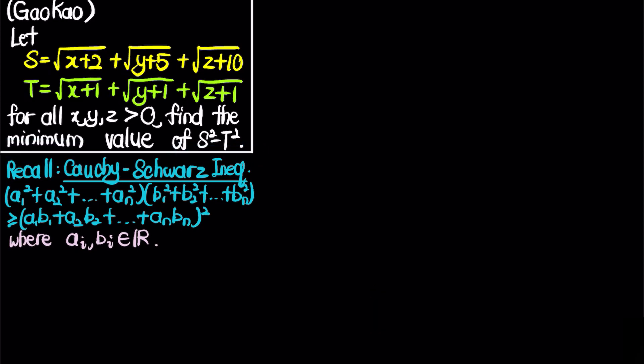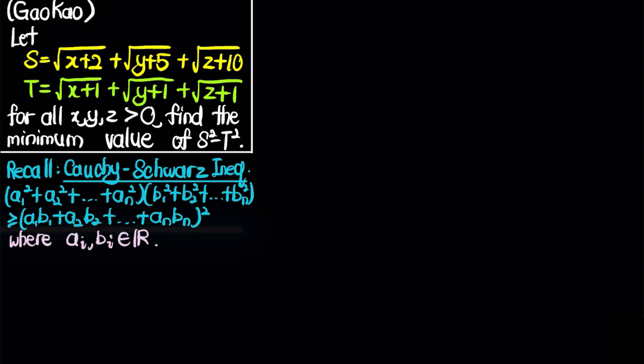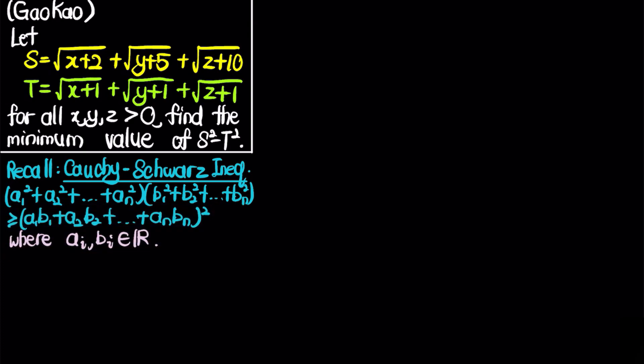To solve this problem, we'll recall a useful inequality: the Cauchy-Schwarz inequality. I also have a video about it — click on the card to check it out. The Cauchy-Schwarz inequality states that (a₁² + a₂² + ... + aₙ²)(b₁² + b₂² + ... + bₙ²) ≥ (a₁b₁ + a₂b₂ + ... + aₙbₙ)², where aᵢ and bᵢ are real sequences.